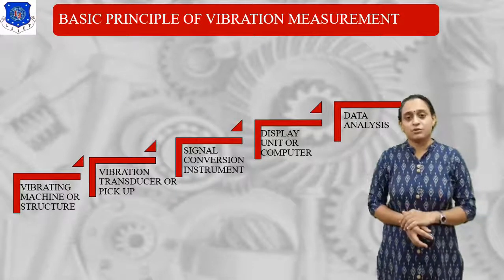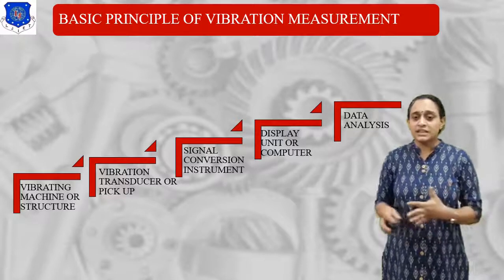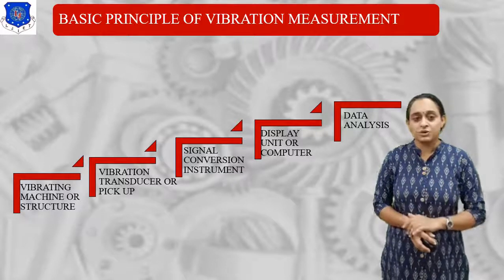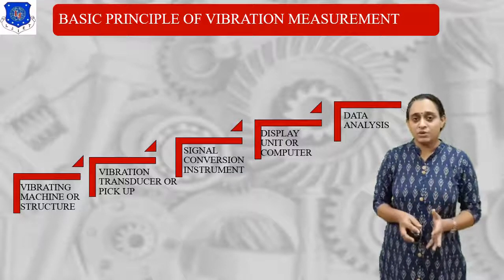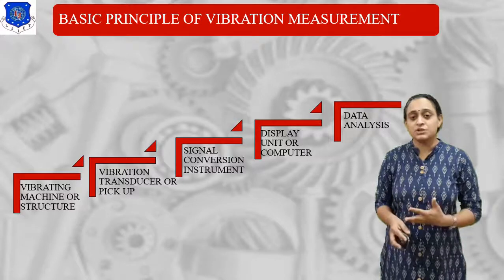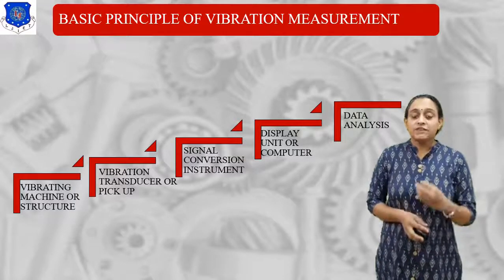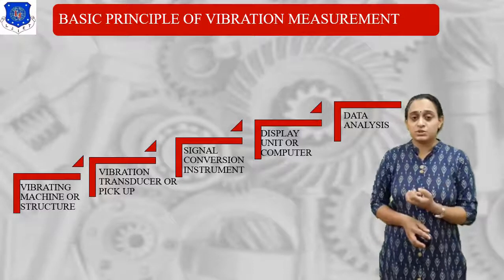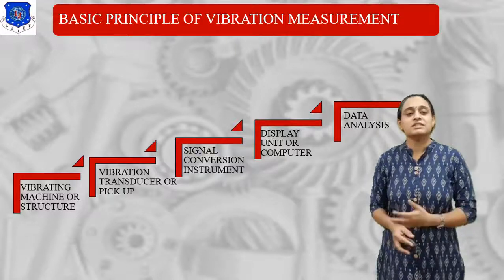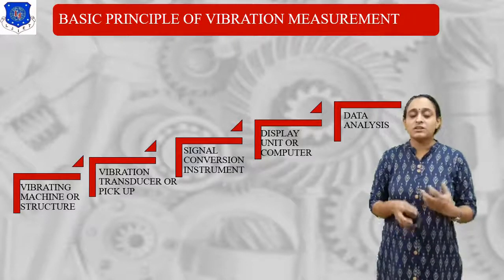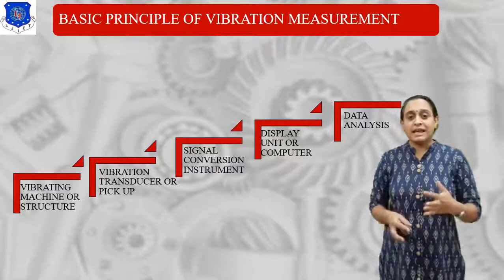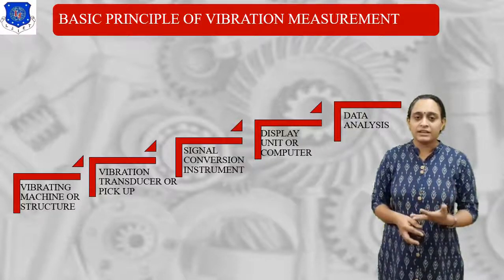What is the basic principle of vibration measurement? As you see in this diagram, in the first stage there is a vibrating machine or structure — the machine itself. In the second stage, there is vibration transmission via pickups — we have to check if vibrations are present. Next, there is the signal conversion instrument, where we convert the vibration into a vibrational signal with proper amplification.